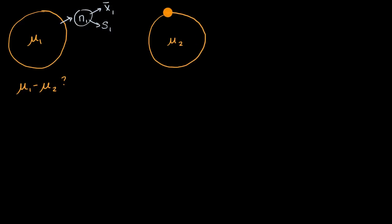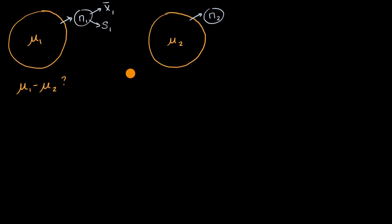You can do the same thing for the population of chihuahuas. Take a sample — and this sample size does not have to be the same as n one, so we call it n sub two; it could be, but it doesn't have to be. From that you can calculate a sample mean x bar sub two, and a sample standard deviation.